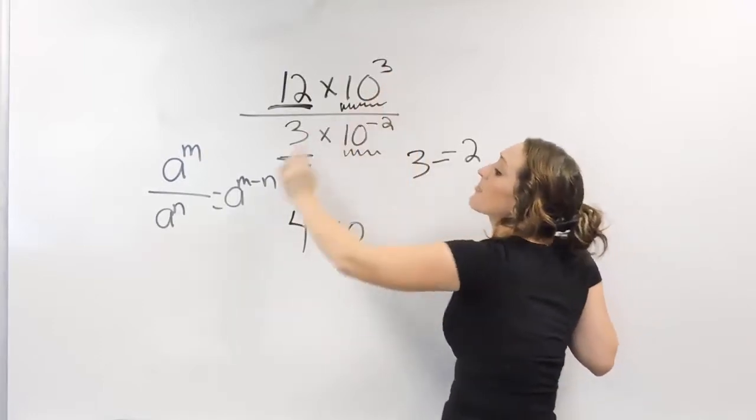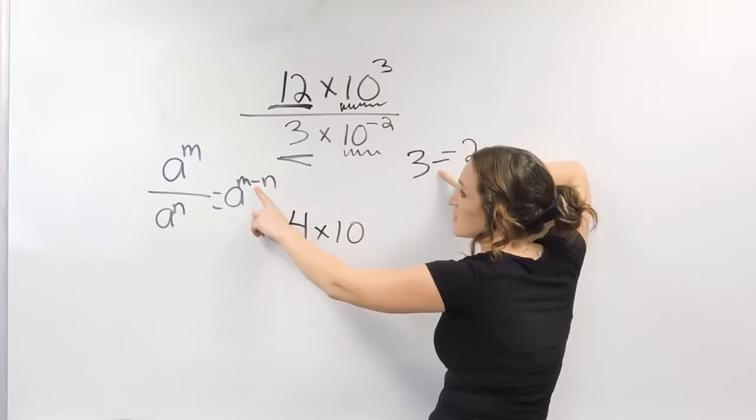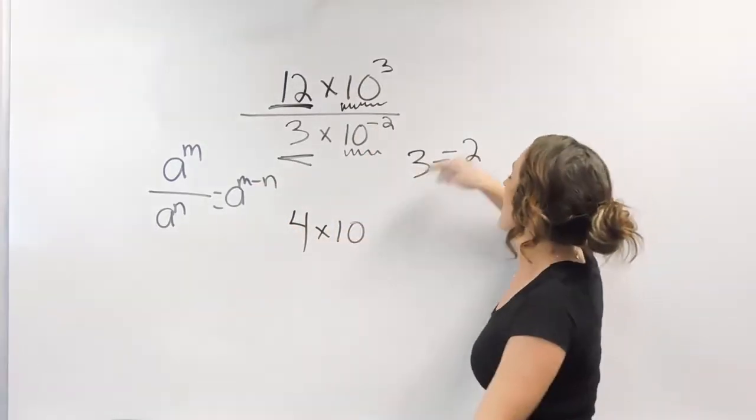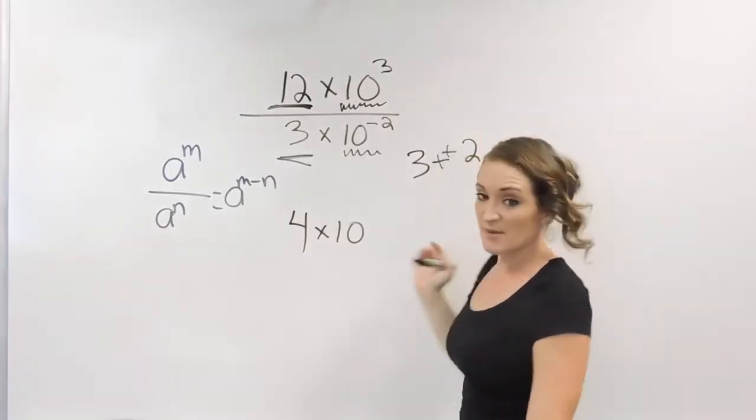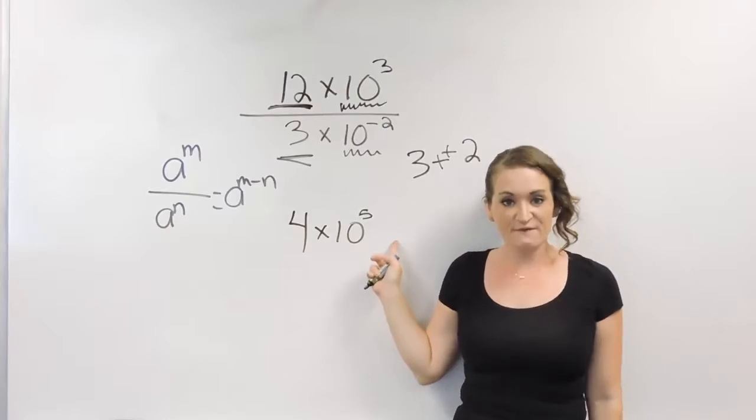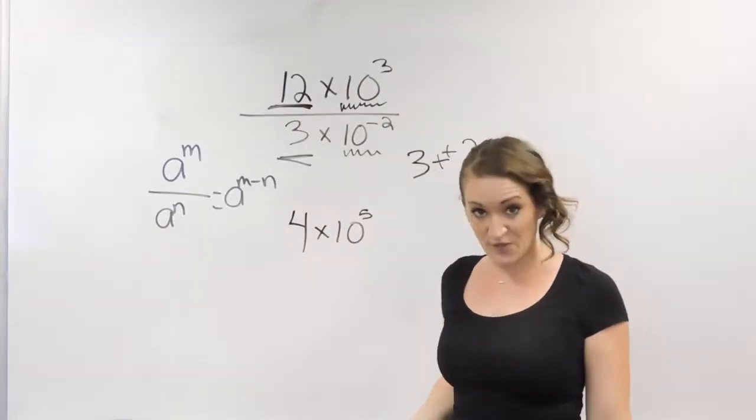Our top exponent is a three. Minus is part of the quotient rule. That minus is there. And we're subtracting a negative two. So, three minus a negative two. That's double negative rule right there, which tells us this is going to be a positive five. So, we are left with four times ten to the fifth power.